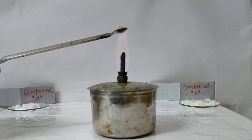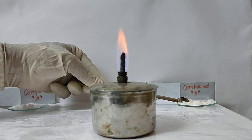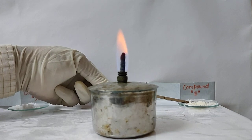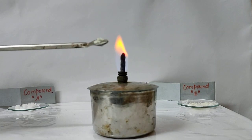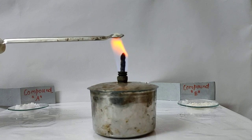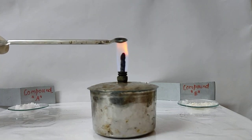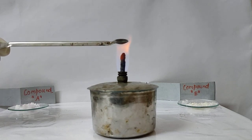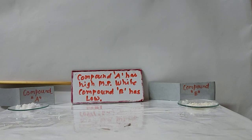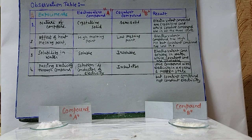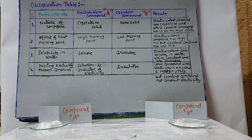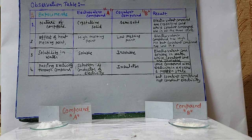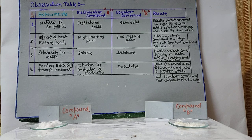Compound A does not easily melt, indicating it has a high melting point, while compound B has a low melting point. Summarizing the observations in an observation table: compound A is electrovalent and compound B is covalent. We have successfully distinguished both compounds.